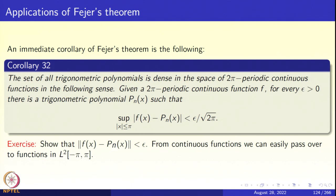An immediate corollary of Fejér's theorem is that the set of trigonometric polynomials is dense in the space of 2π-periodic continuous functions in the following sense: if you take a 2π-periodic continuous function, for every ε > 0 there is a trigonometric polynomial p_n(x) such that the supremum of |f(x) − p_n(x)| over |x| ≤ π is less than ε/√(2π). We will see why the √(2π) comes in very soon.